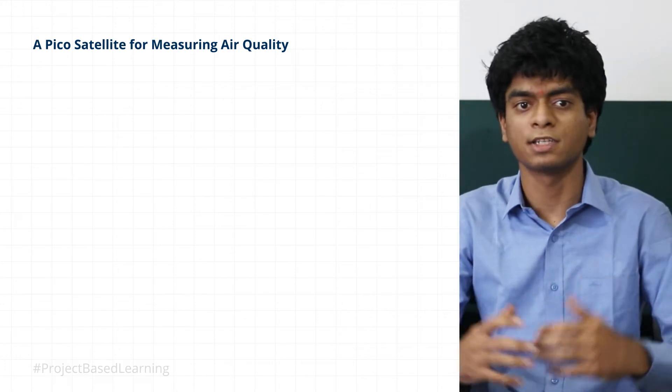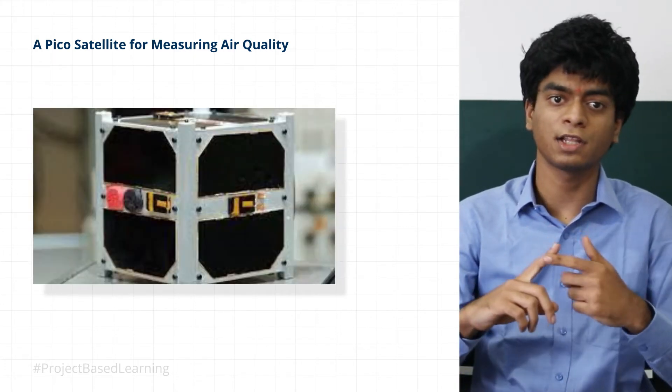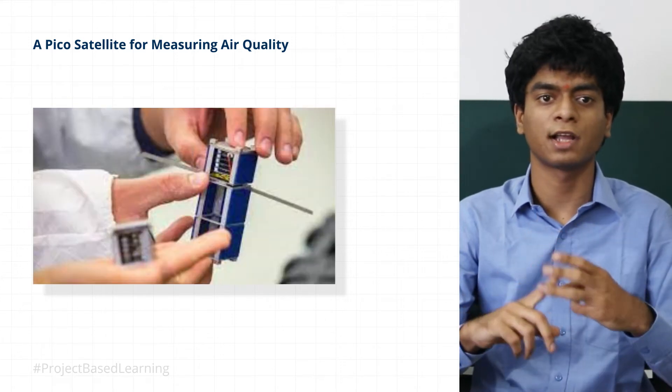There are lots of sub-categories of satellites divided based on their size like PICO satellites, nanosatellites, femtosatellites and many more.